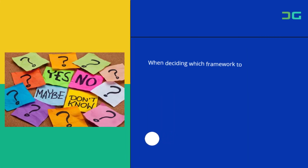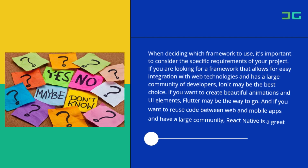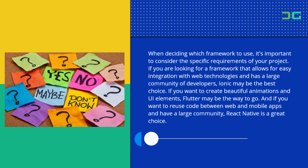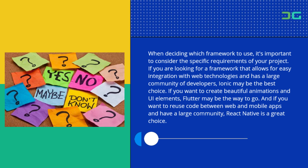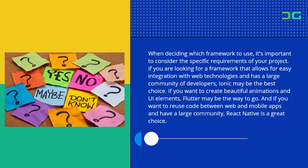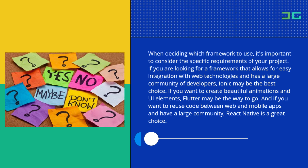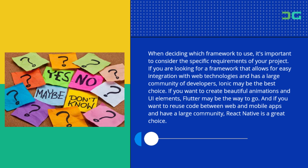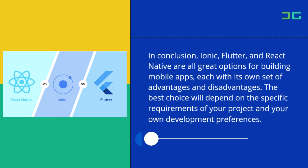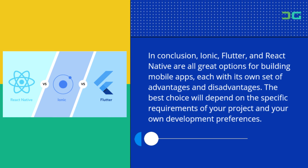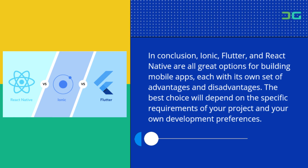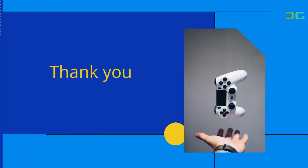When deciding which framework to use, it's important to consider the specific requirements of your project. If you are looking for a framework that allows for easy integration with web technologies and has a large community of developers, Ionic may be the best choice. If you want to create beautiful animations and UI elements, Flutter may be the way to go. And if you want to reuse code between web and mobile apps and have a large community, React Native is a great choice. In conclusion, Ionic, Flutter, and React Native are all great options for building mobile apps, each with its own set of advantages and disadvantages. The best choice will depend on the specific requirements of your project and your own development preferences.